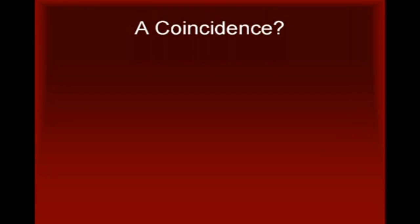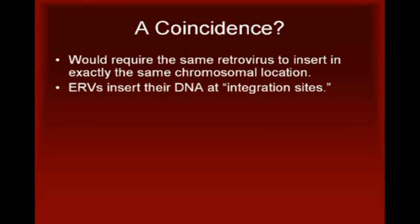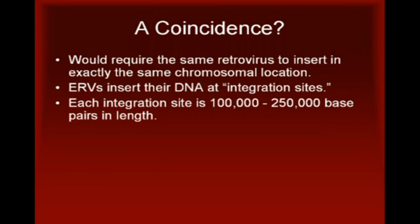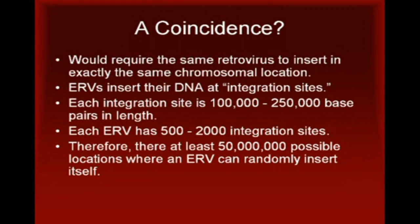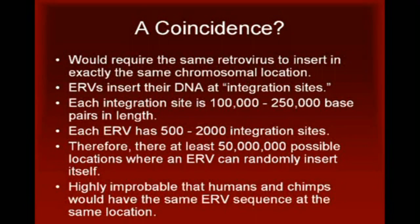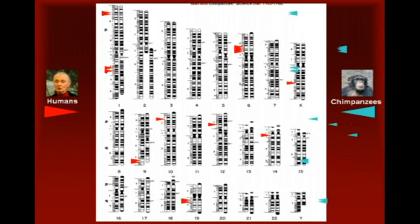Could this be merely a coincidence? It is possible, but highly unlikely. For it to be a coincidence, the ancestors of modern humans and chimpanzees would have to have been separately infected by the same retrovirus that inserted its DNA in exactly the same chromosomal location in their respective genomes. It is possible to roughly calculate the likelihood. ERVs infect their hosts by inserting their DNA into the host genome in what are called integration sites. Each of these integration sites is approximately 100,000 to 250,000 base pairs in length, and for each ERV there are approximately 500 to 2,000 possible integration sites. That means there are, at minimum, 50 million possible locations where an ERV can insert itself into the genome, and it does so randomly each time. It is therefore highly improbable that humans and chimpanzees would independently be infected by the same ERV sequence at the same location on the chromosome. The evidence is even more compelling when we consider the fact that humans and chimpanzees share about 16 instances of ERV sequences, all of which occur in the same chromosomal locations in our genomes. The odds against this happening by chance are truly astronomical.